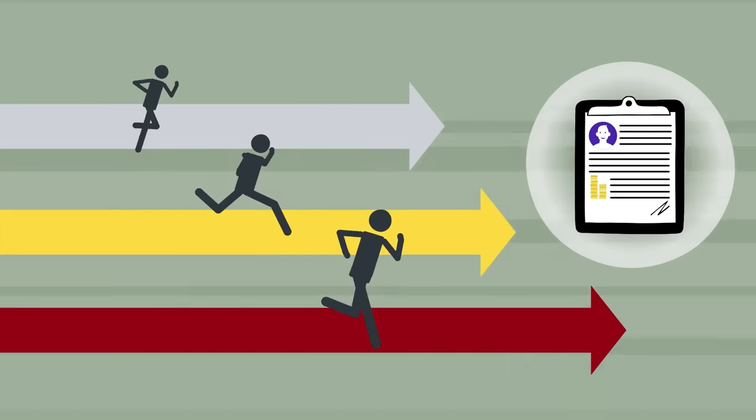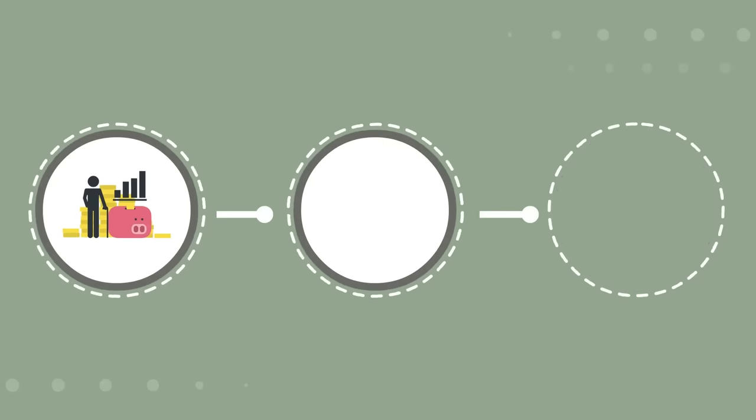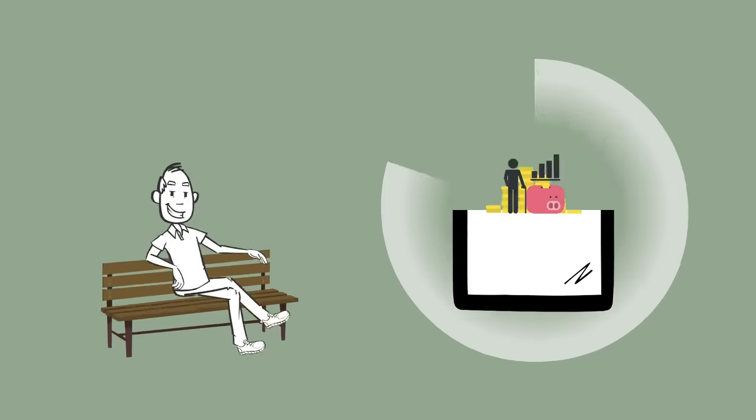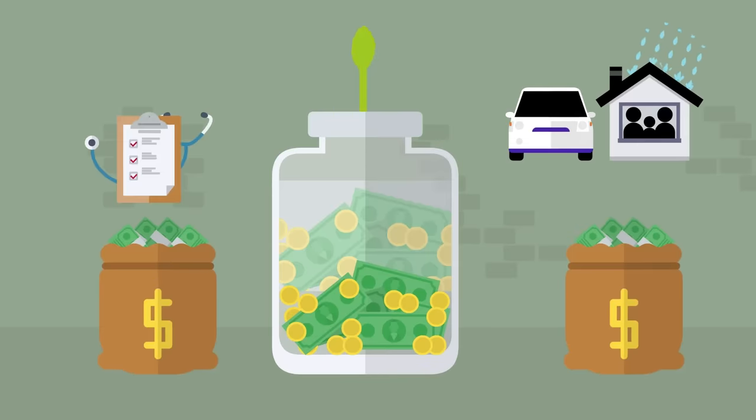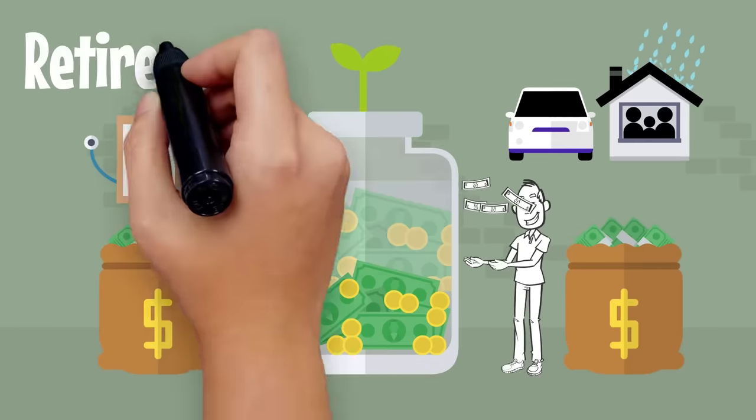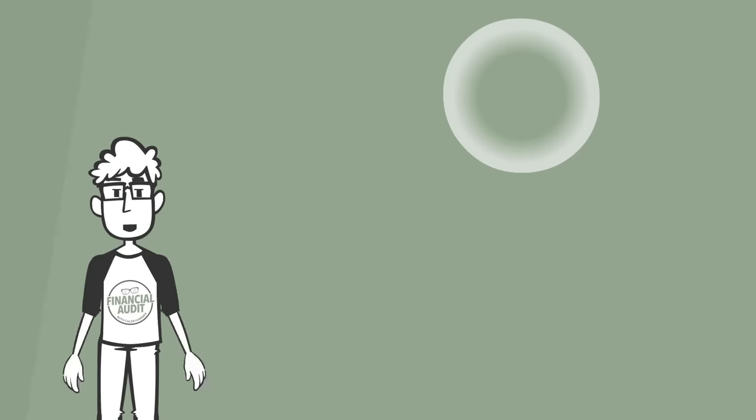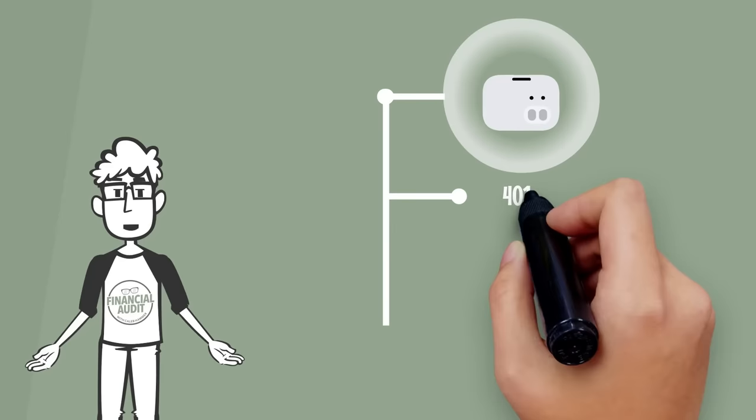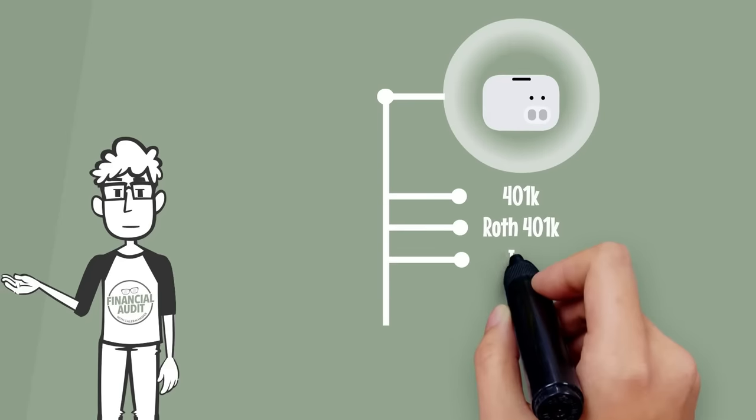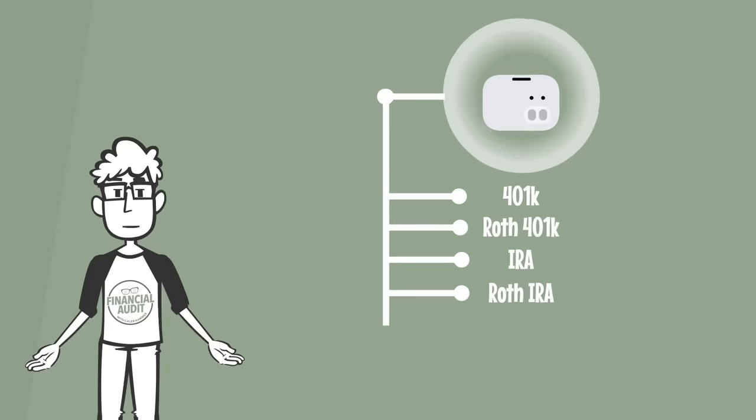In general, if you're an average person, you'll likely run into three different types of tax-advantaged accounts: retirement accounts, health, and education accounts. When it comes to retirement accounts, these offer tax advantages that encourage you to save for retirement. The names you'll hear the most when it comes to these are the 401k, Roth 401k, IRA, and Roth IRA.